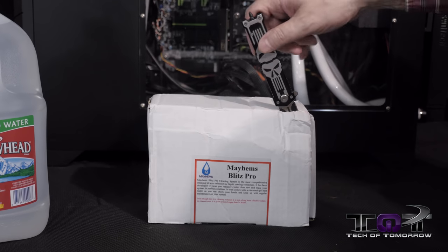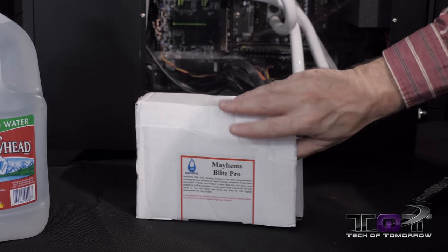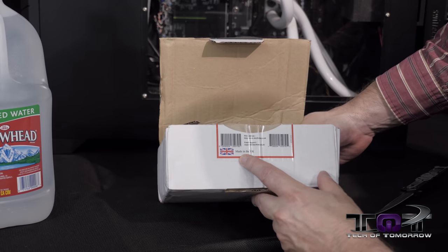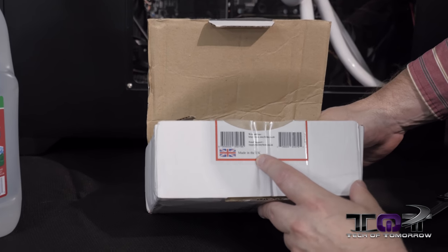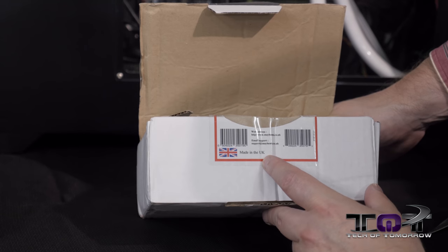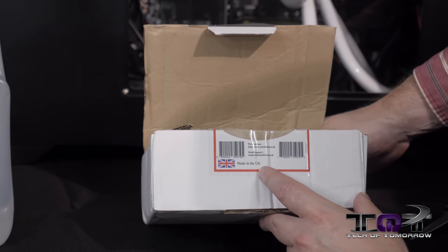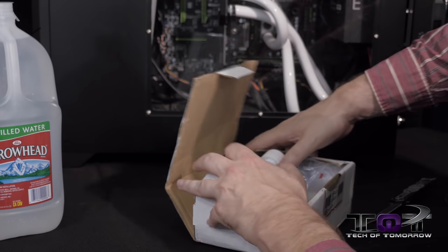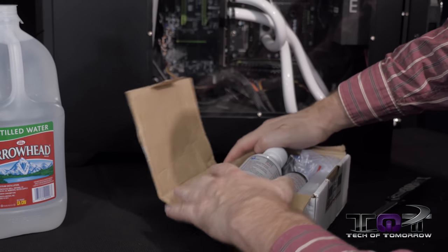All right folks, here we go. We have the Mayhem Blitz Pro kit. Like I said, this thing's about $49. And by the way, this stuff comes from the UK. So from across the pond from England it has came. Now there's two parts to this kit and the instruction manual.